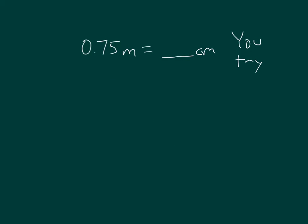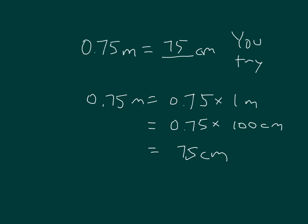Your turn to try. Show your work. 0.75 meters equals 0.75 times 1 meter, which equals 0.75 times 100 centimeters, which equals 75 centimeters. Let's read that together: 0.75 meters equals 75 centimeters.